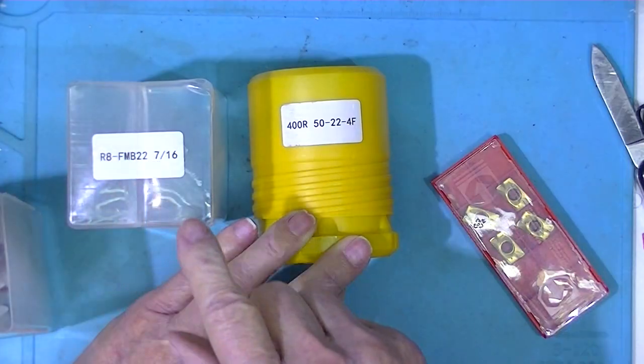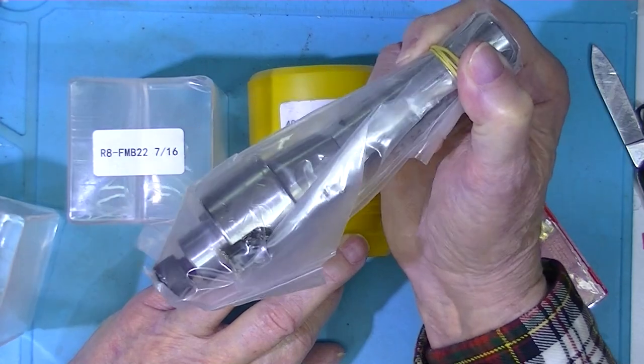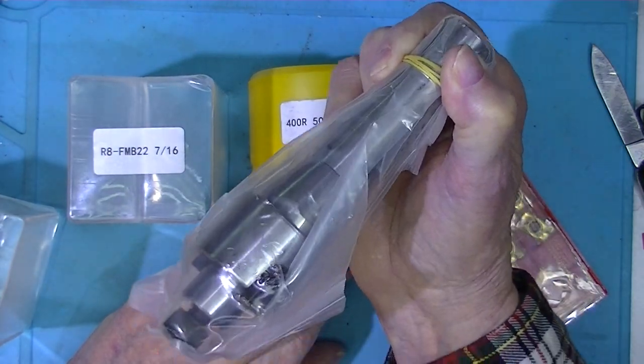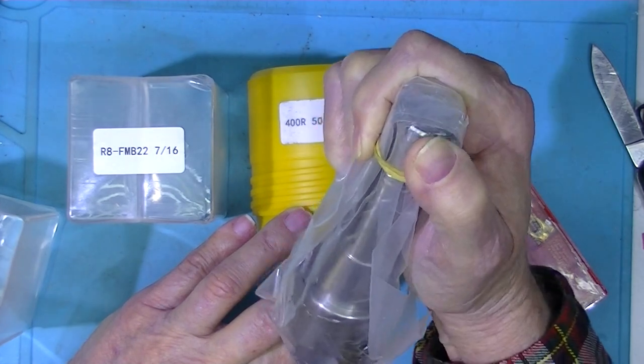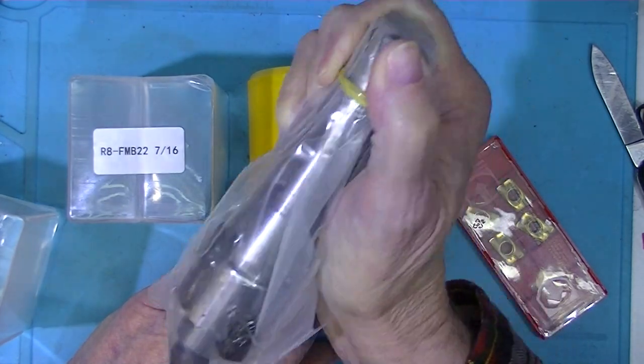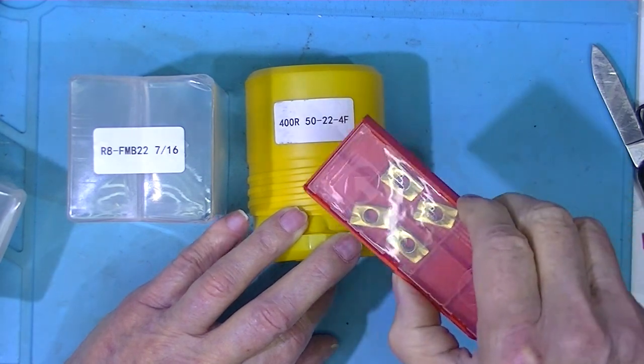It comes in three packages. This is an adapter, a mill driver on an R8 shank. This should be the face mill and four inserts.